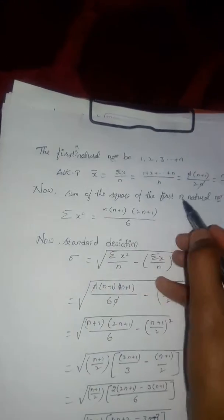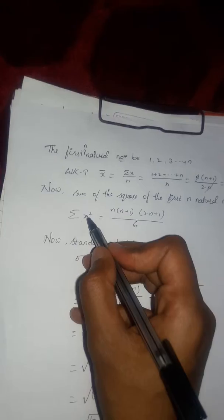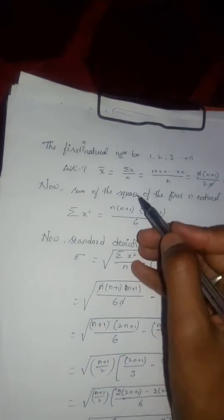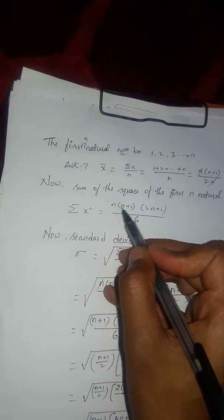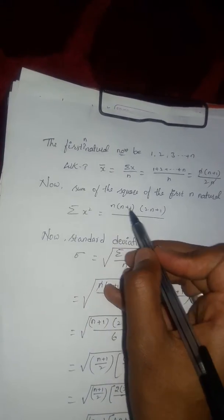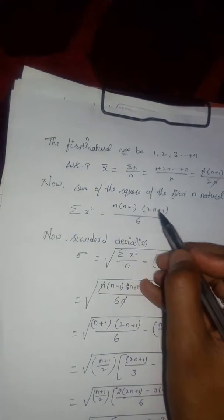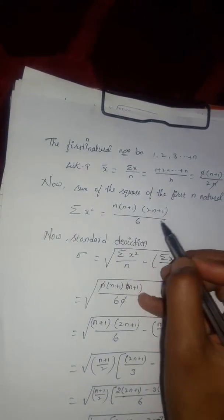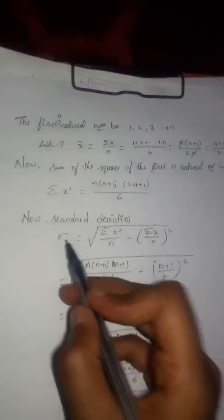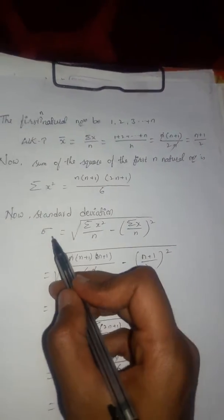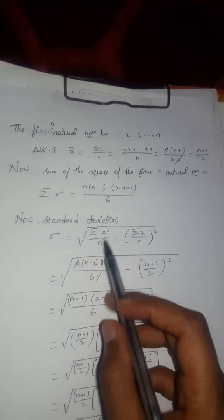The sum of squares of the first n natural numbers, σx², is the general formula: n(n+1)(2n+1) divided by 6. Next, the standard deviation formula: σ is equal to the square root of σx² divided by n, minus (σx divided by n) whole square.